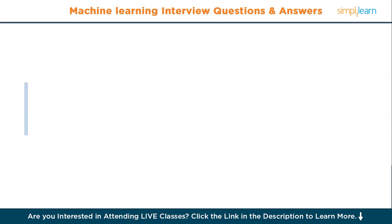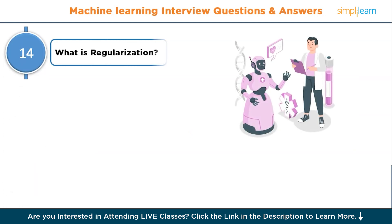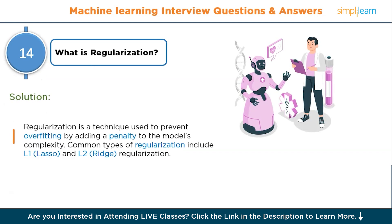Moving to question number fourteen: what is regularization? Regularization is a technique used to prevent overfitting by adding a penalty to the model's complexity. Common types of regularization include L1, that is lasso, and L2, that is ridge regularization.